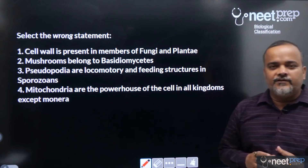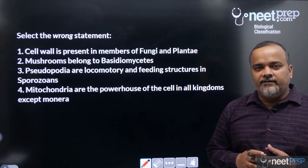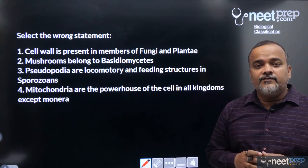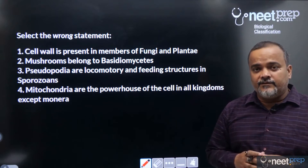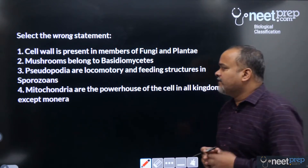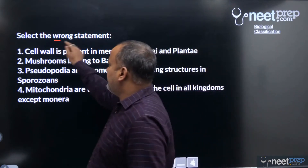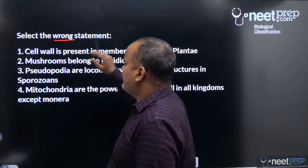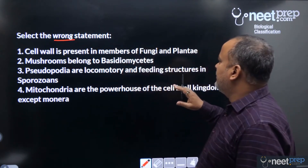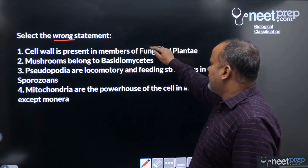Now I'm going to discuss some selected questions from the chapter Biological Classification. This is an important chapter that carries around three to four questions. First question: select the wrong statement. First option — cell wall is present in members of fungi and plants: true. In fungi we have chitin as cell wall material; in plants we have cellulose.